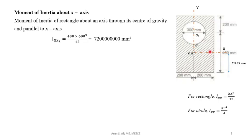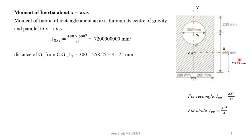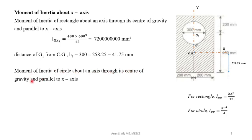G₁ is located at 300 mm from a-b. The distance h₁ between G₁ and the centroidal x-axis is h₁ = 300 − 258.25 = 41.75 mm. For the circle, the moment of inertia about an axis through its center of gravity G₂ parallel to the x-axis is IGx₂ = πr⁴/4. Substituting r = 150 mm gives the value of IGx₂.